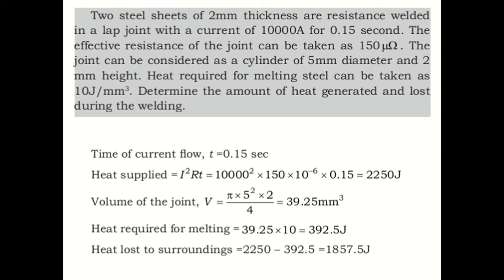Now, we need to calculate the amount of heat generated and how much heat is rejected or lost to the surroundings. These are the two things we need to calculate. Hope you are remembering when we started discussing resistance welding, we came up with a formula: H = I²Rt, where I is the current, R is the resistance, and t is the time.